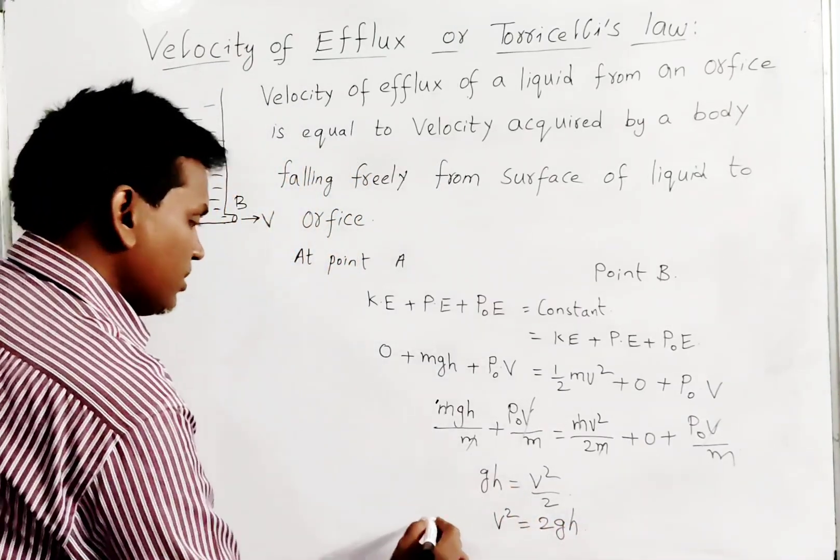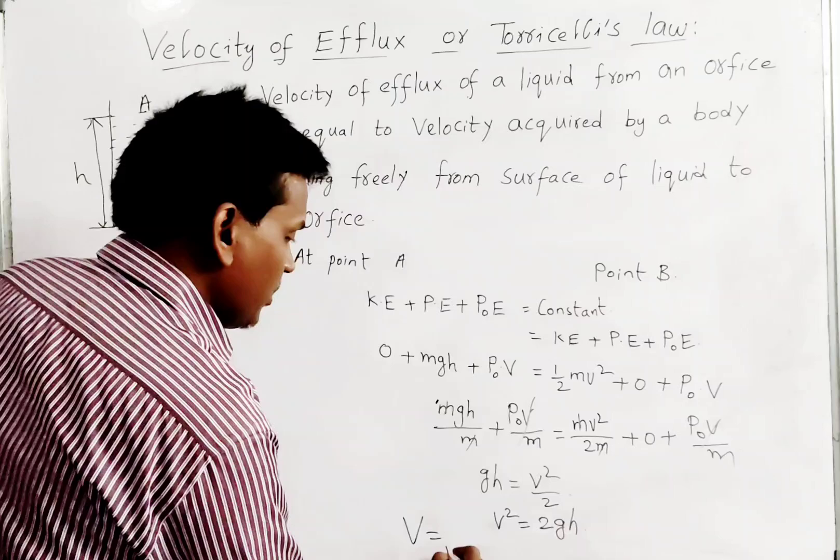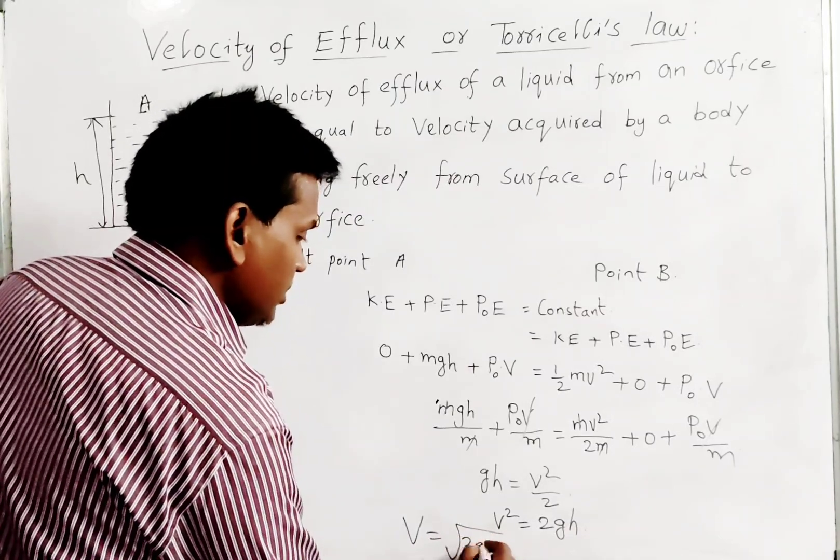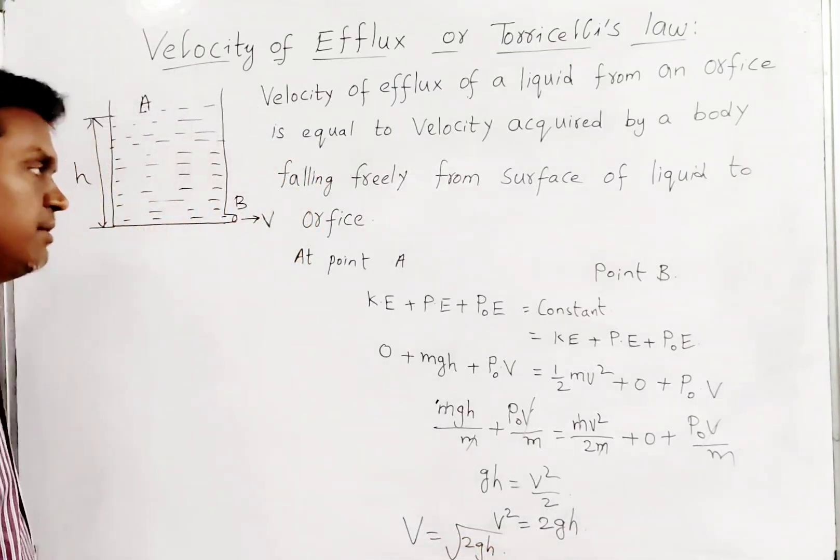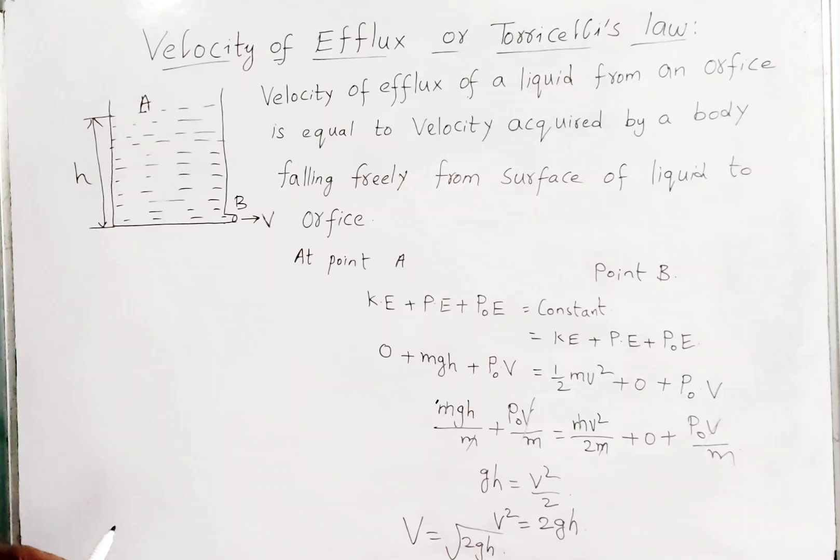V² equals 2gh, and V equals √(2gh). This is the velocity of the fluid or liquid at the orifice. That velocity is called velocity of efflux.